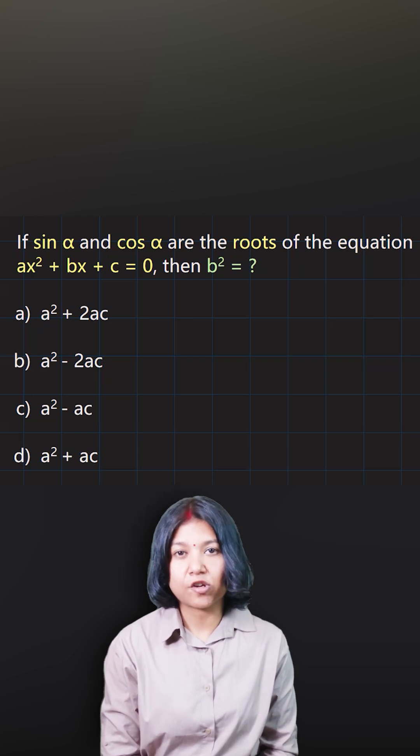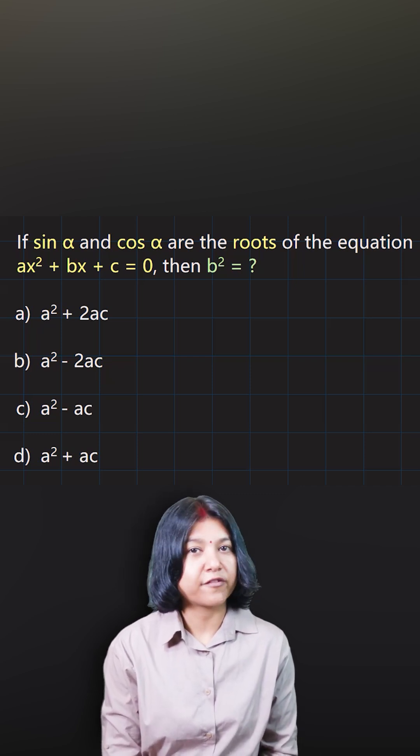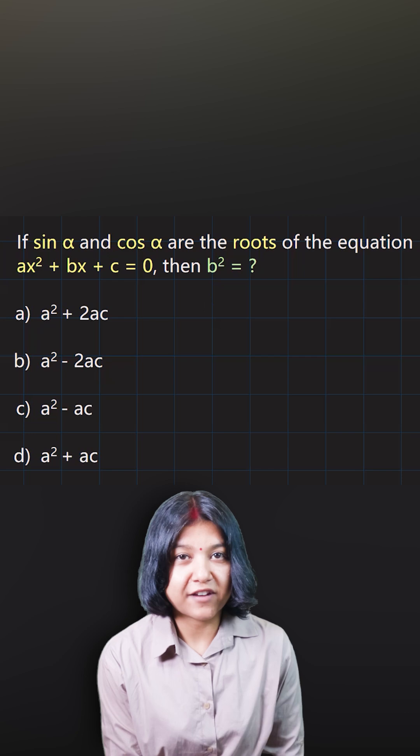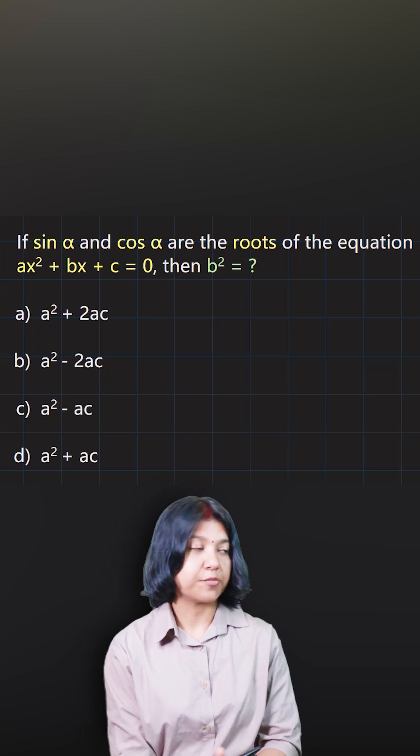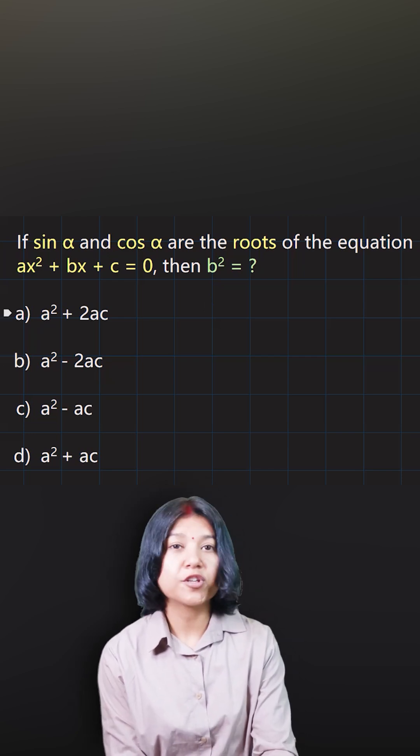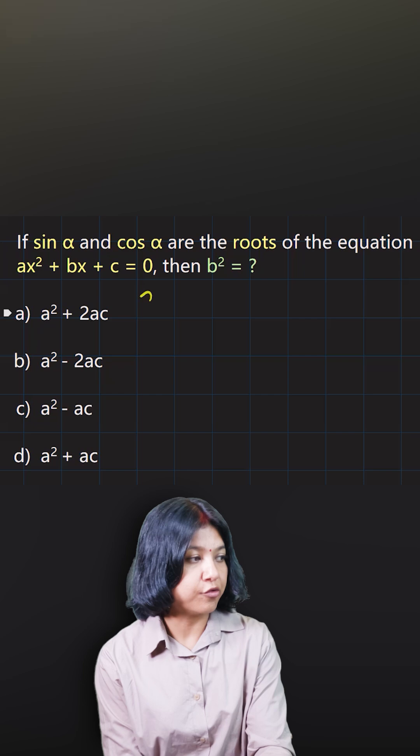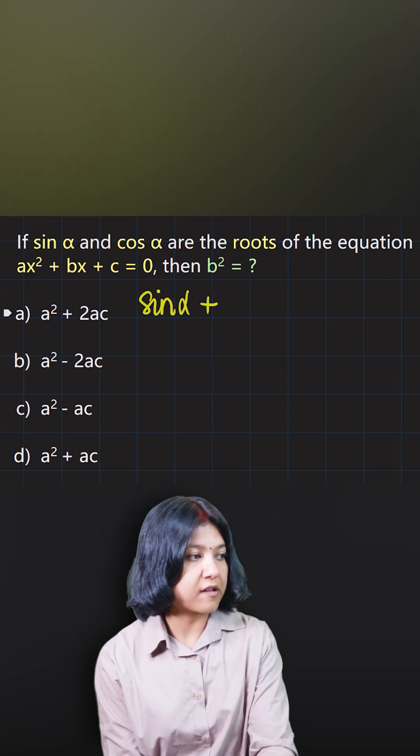You have been given sin α and cos α to be the roots of a quadratic equation. They want you to find the square of b, which is the middle term or the middle coefficient. So what you do is take the sum of roots: sin α plus cos α.